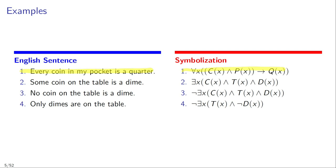Now let's look at a second example. Suppose you want to symbolize 'Some coin on the table is a dime.' Using C for coin, T for on the table, and D for dime, we can symbolize this as: there is an X such that Cx and Tx and Dx. For a third example, to symbolize 'No coin on the table is a dime,' you can simply prefix the previous sentence with a negation sign: it is not the case that there is an X such that Cx and Tx and Dx.